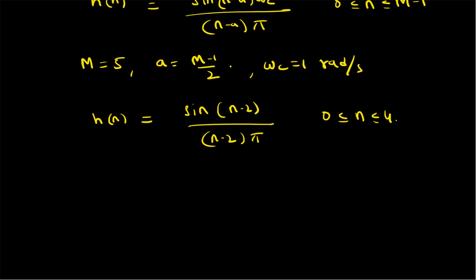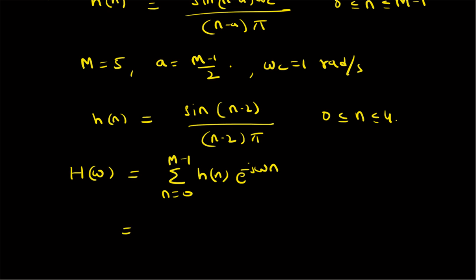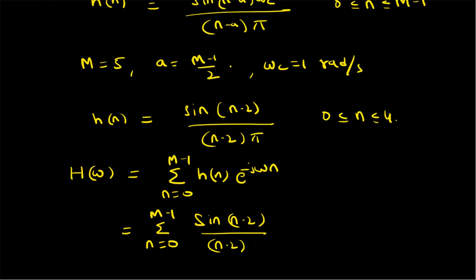Now the frequency response H(ω), which is basically the DTFT of h(n), can be computed as follows. It equals the summation from n = 0 to m−1 of [sin(n−2) / ((n−2)π)] multiplied by e^{−jωn}.